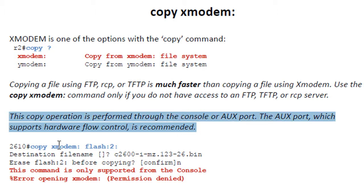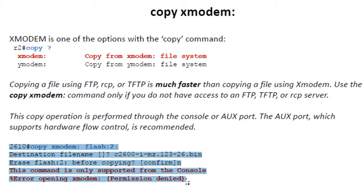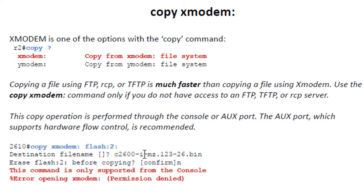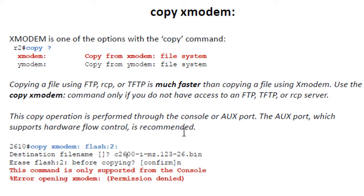Thanks a lot, Cisco. I'll go ahead and use the auxiliary port, which is what I did here in this example. Your mileage may vary — this might be platform or IOS dependent — but in this case on a 2610, I was not able to use the auxiliary port. It told me I can only do this from the console port. So just keep that in mind. If you're in a situation where you're using Xmodem, have the documentation up, because you're not going to be doing this daily. Like a password recovery, it's always good no matter how many times you've done it to have the documentation in front of you.